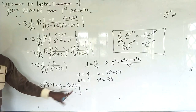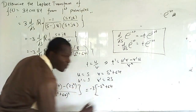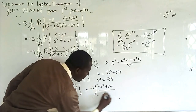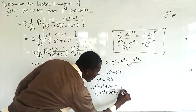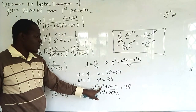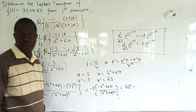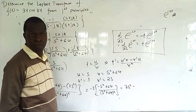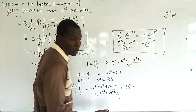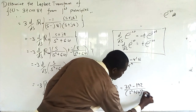Simplifying: s² - 2s² = -s², so the numerator becomes -3(-s² + 64) in the bracket. The denominator is (s² + 64)². Taking -3 inside: 3s² - 192, over (s² + 64)². And we are done.